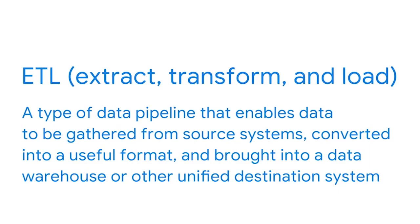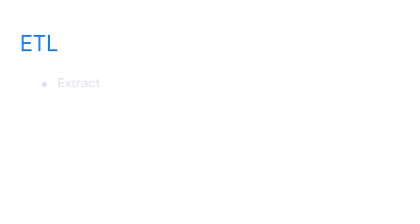Now we're going to discuss a specific kind of pipeline: ETL. ETL enables data to be gathered from source systems, converted into a useful format, and brought into a data warehouse or other unified destination system. Like other pipelines, ETL processes work in stages: extract, transform, and load. Let's start with extraction.